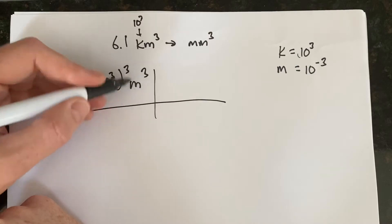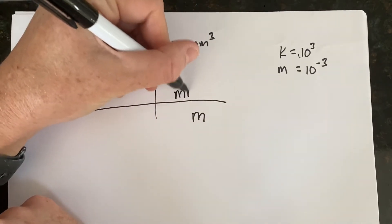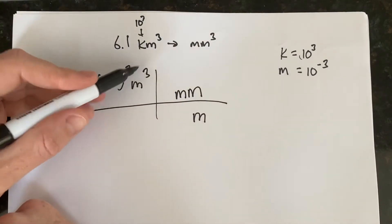Now we set this up. If this is meters, we put meters here, and we're turning it into millimeters, but not just any kind of millimeters. It's millimeters cubed.